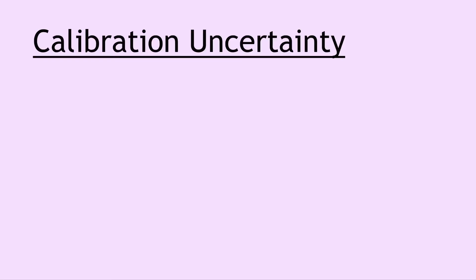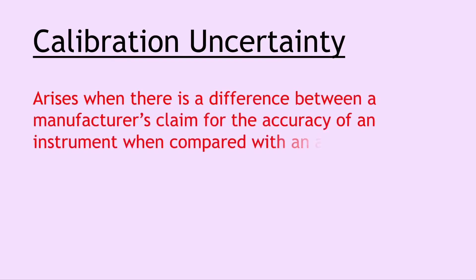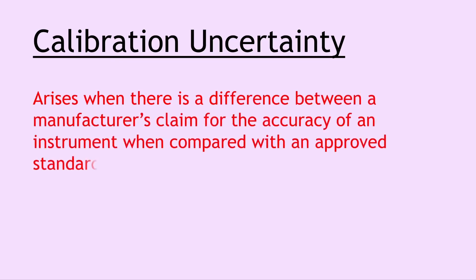A new definition that wasn't in the higher course is calibration uncertainty, and this arises when there is a difference between a manufacturer's claim for the accuracy of an instrument when compared with an approved standard. An example of this is when manufacturers make a piece of equipment, they will specify the calibration uncertainty because they know how different it is to an approved standard. You'll often find the calibration uncertainty stated in the instruction manual for a measuring device.